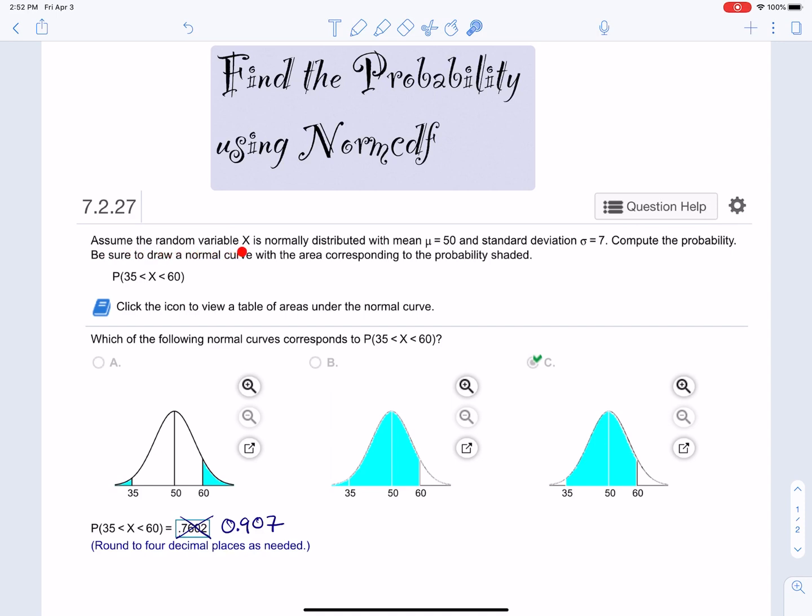It says assume the random variable X is normally distributed with mean mu equals 50 and standard deviation sigma equals 7. Compute the probability. Be sure to draw a normal curve with the area corresponding to the probability shaded. So we're trying to find this probability. The way we read this is the probability that X is in between 35 and 60. It's important to note that we're dealing with a normally distributed random variable.